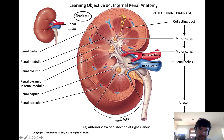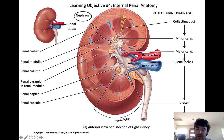The lighter-staining tissue in between each pyramid is called a renal column. The tips of the renal pyramids are referred to as renal papilla. When you take a renal column, the renal medulla, and the renal cortex and slice it into a pizza-wedge shape, you form a larger functional region of the kidney called the renal lobe.